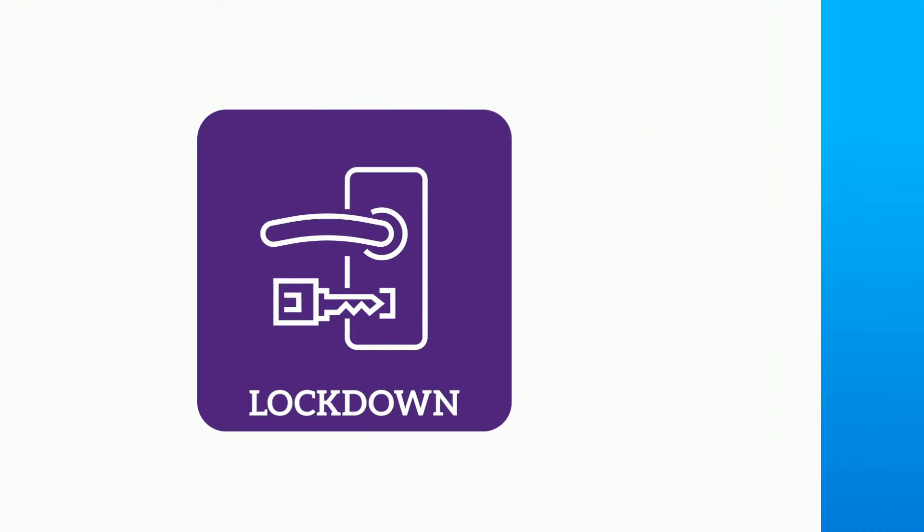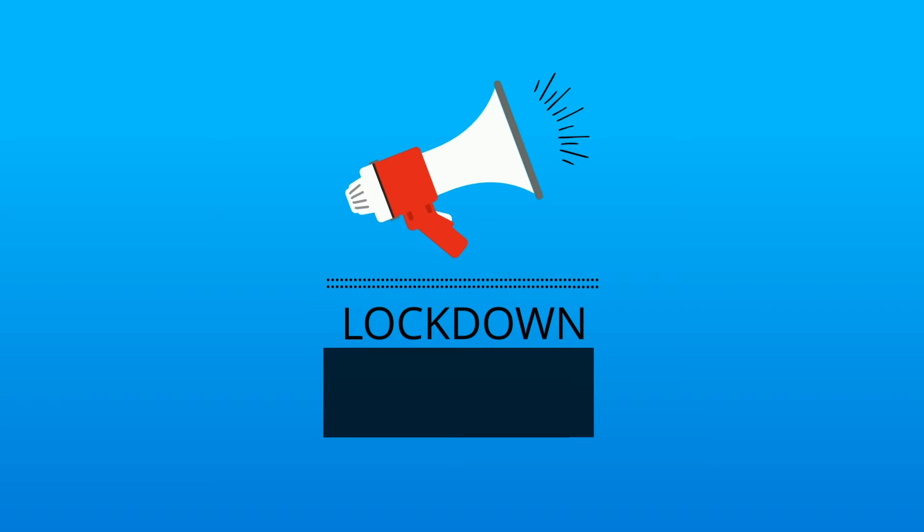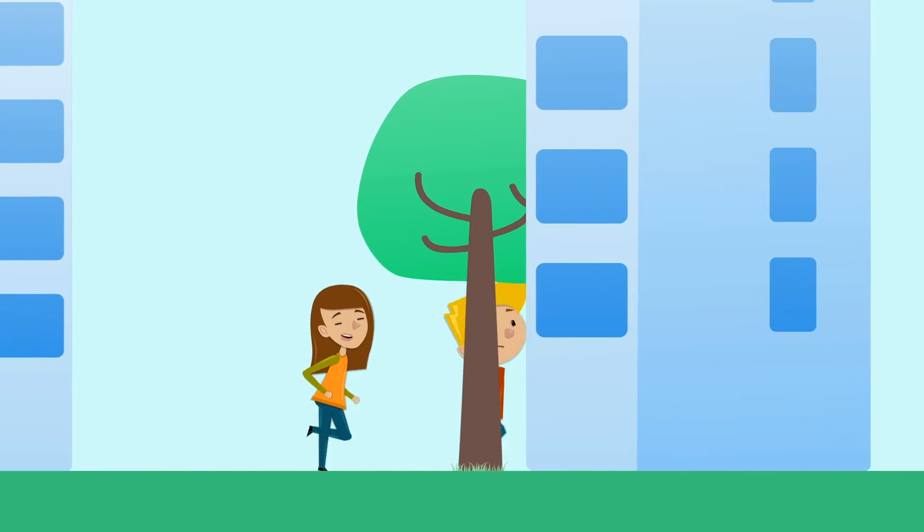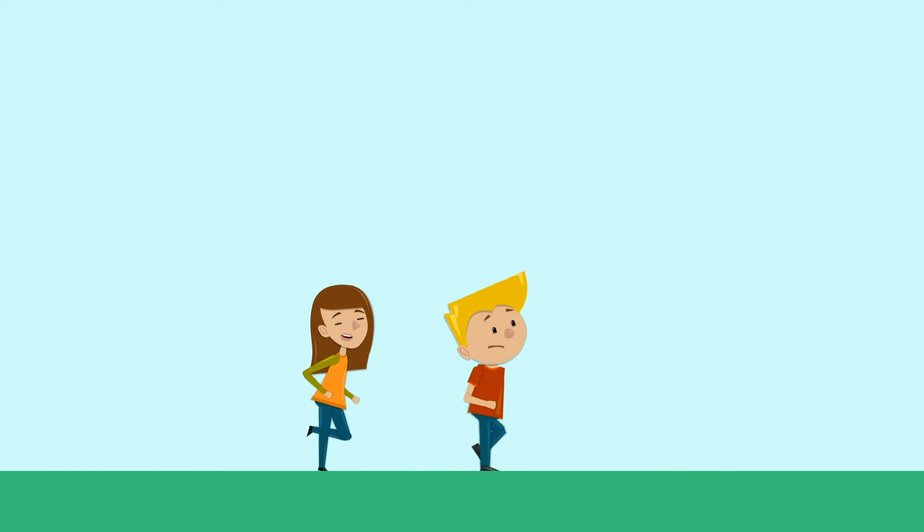Let's start with lockdown. After hearing the TCU alert message to lockdown, you should either run, hide, or fight. Run. Run only if you see or hear the shooter and are sure you can get away. You do not want to run into the crisis area. If you are outside or are sure that you can safely run away, then run.